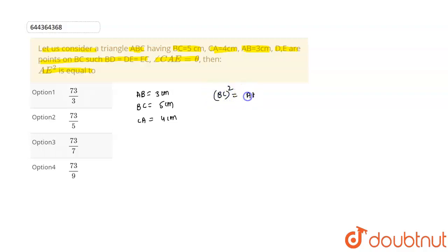As it is 5 whole square and it is equal to 3 whole square plus 4 whole square. So it satisfies the equation, 25 is equal to 25. It means our triangle is a right angle triangle.